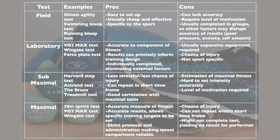And lastly, maximal tests — examples include the 30 meter sprint test, VO2 max test, and Wingate test. Pros: very accurate measure of fitness, very accurate results, allows specific training targets to be set, and strict protocol and administration makes retest comparisons extremely reliable and accurate. Cons: there's a chance of injury, you can't repeat them within a short time frame because you've reached exhaustion, and the performer might not complete the test — yielding no result. For example, if you drop out of the VO2 max test before reaching your maximum, you'll get a much lower score. There's a level of motivation required to really dig deep and push yourself to the max.